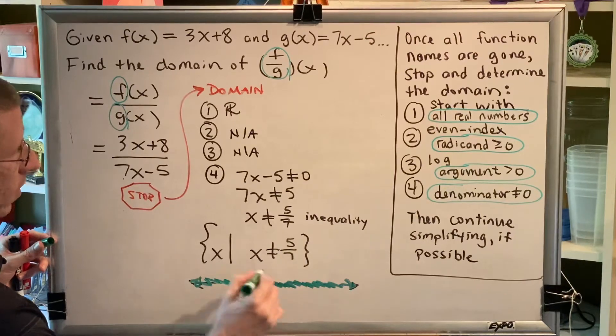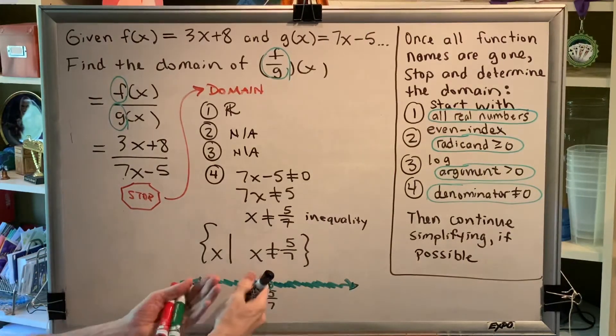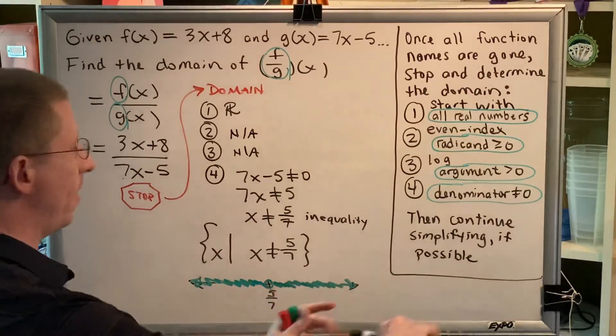In other words, there is a whole. This separates my answer into two intervals, the numbers to the left and the numbers to the right.